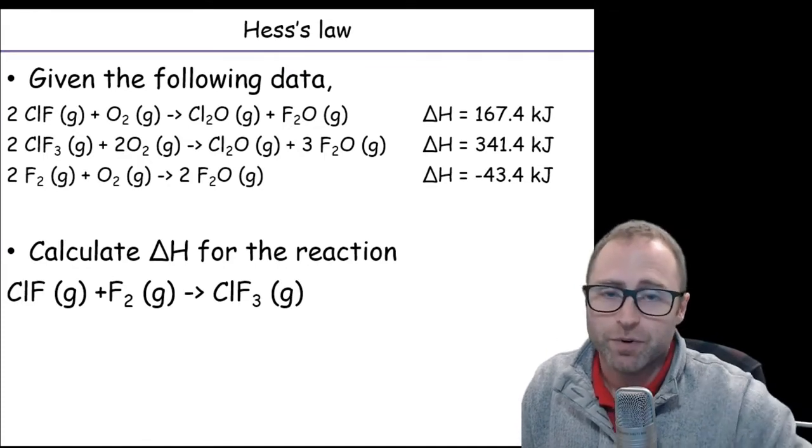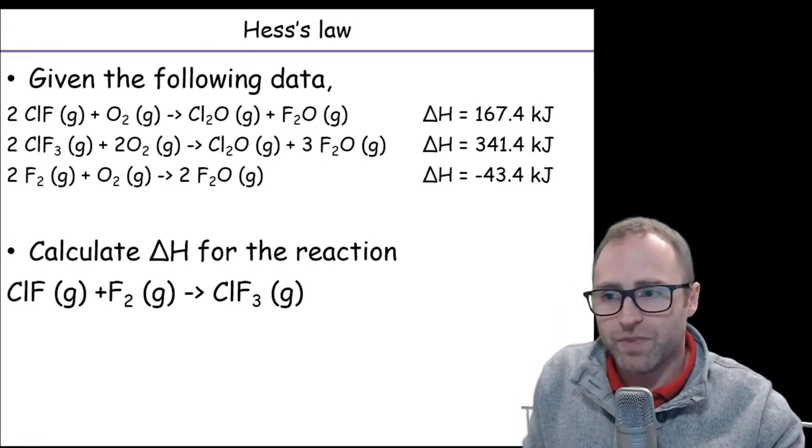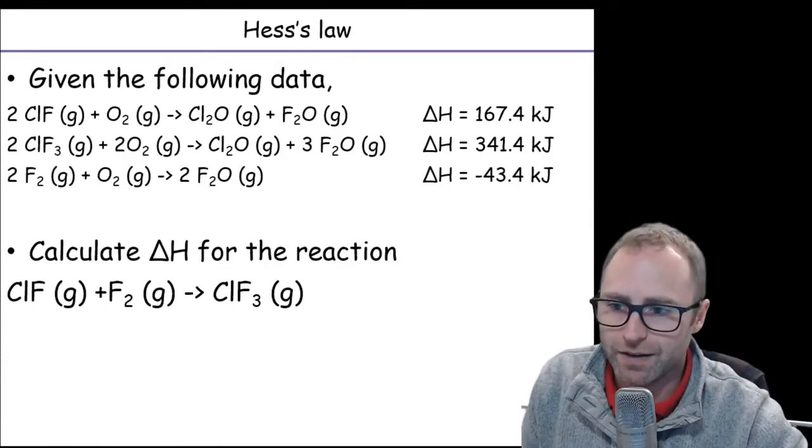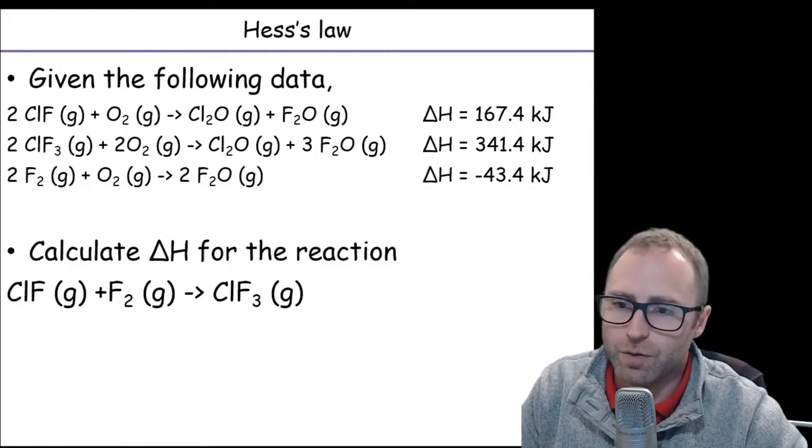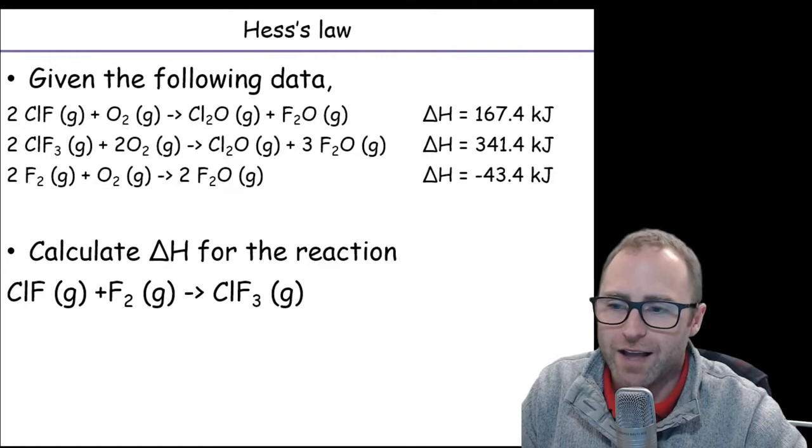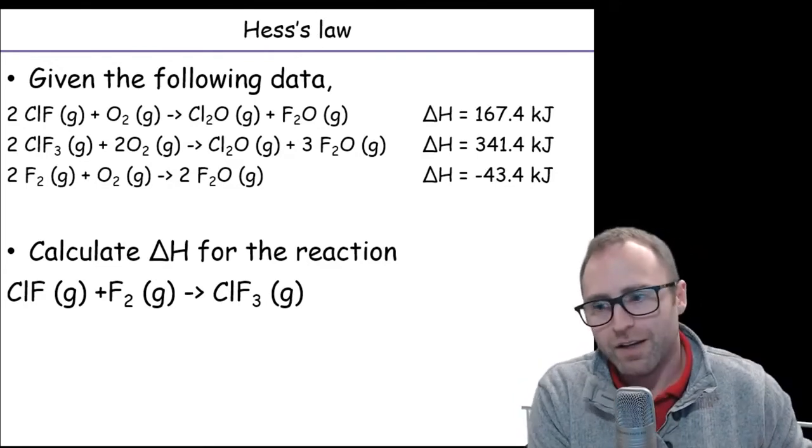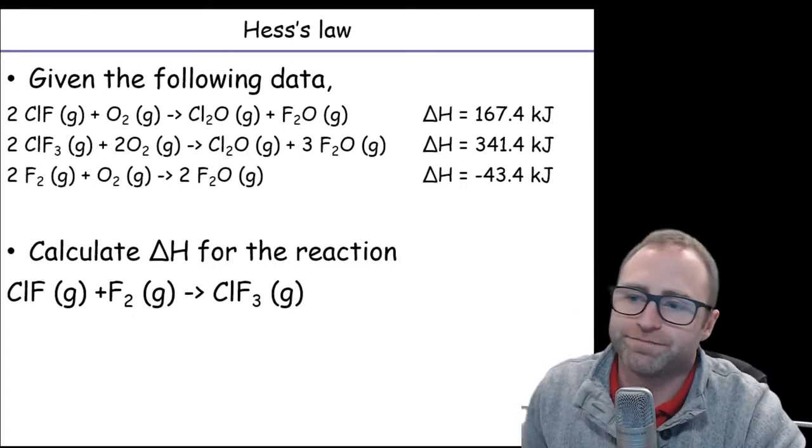Okay, this is a pretty standard fair Hess's Law kind of problem. So it says given the following data, and it's going to give you a bunch of equations, and it's going to give you a bunch of enthalpies of reaction, it will ask you something along the lines of calculate delta H for this reaction.